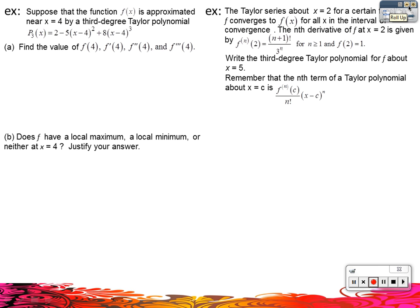Here we have: suppose the function F of x is approximated near x equals four by a third degree Taylor polynomial. That gives us information — now you know exactly what that means: the Taylor polynomial is centered around four. So that's where it's centered, at x equals four, by a third degree Taylor polynomial. Here's our polynomial, and they want us to find actual values. With this problem, it's very similar to the last one, except before we were only able to get whether it's positive or negative — but this one, we're actually going to be able to find the actual number: what is F of four, et cetera.